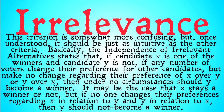It might be the case that X stays a winner or X becomes not a winner, because maybe there's some other candidate Z that gets ranked above both X and Y — that's allowed. But it seems that in no case, if we ran the voting system and X won, and then no one changed their preference of X over Y or Y over X, and we ran the voting system again and now Y is equal with X or Y is now a winner, should that happen. It seems like we have a problem.